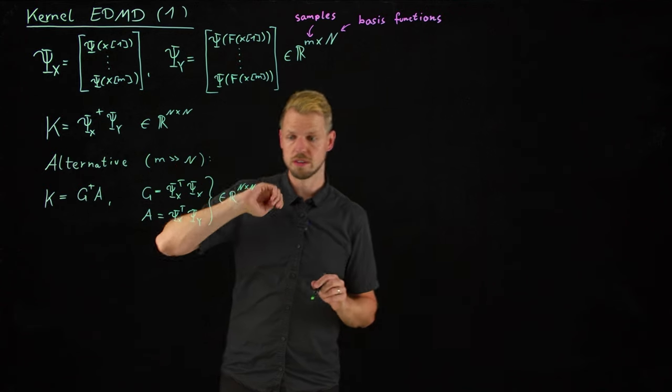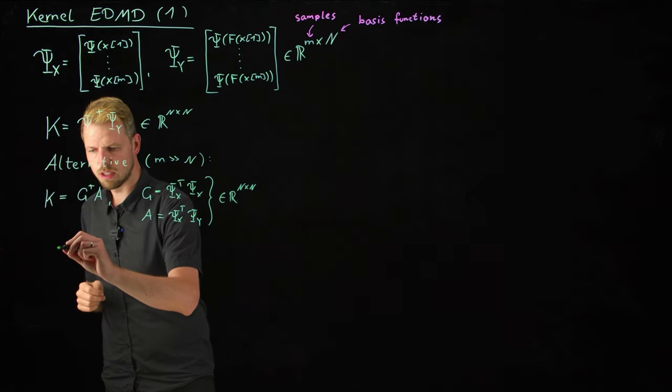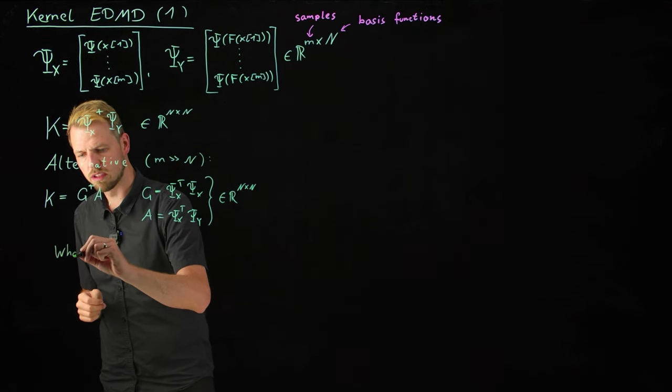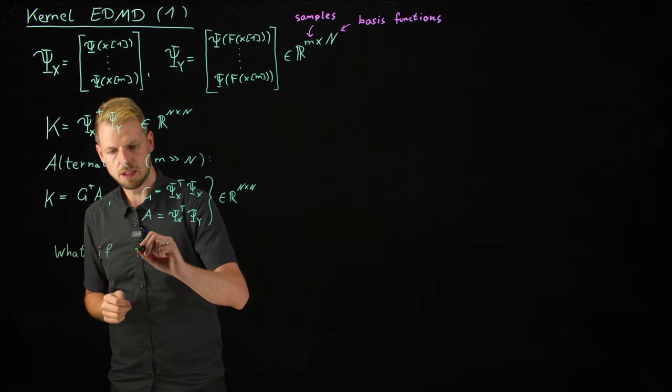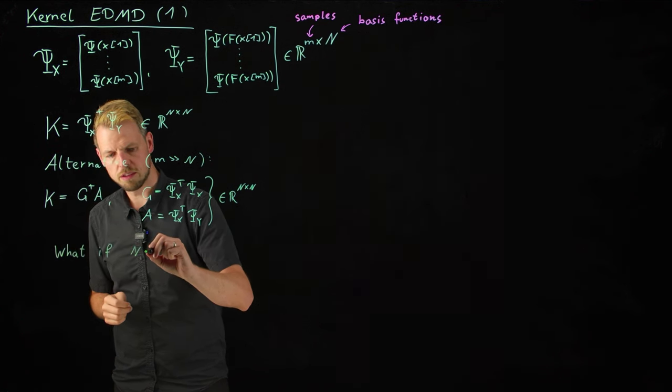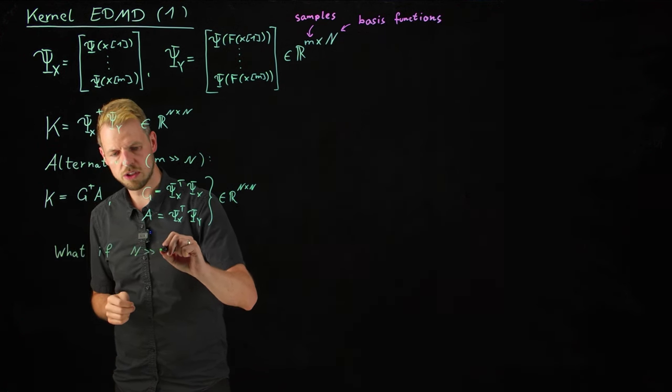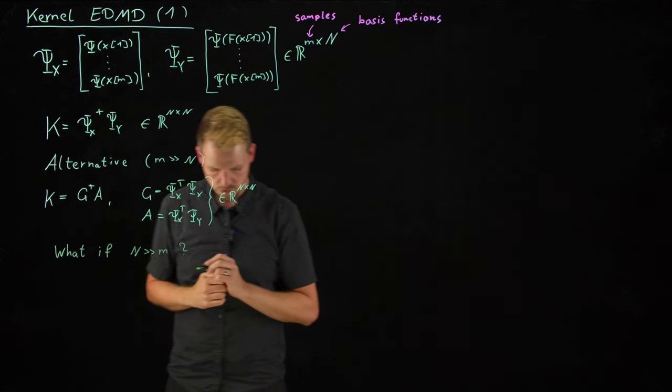However, this doesn't always have to be the case, right? So the question that we would like to ask now is what if the opposite is the case? So n is much larger than m.